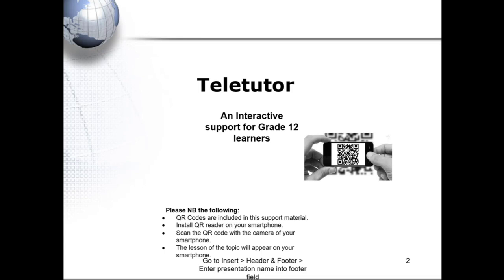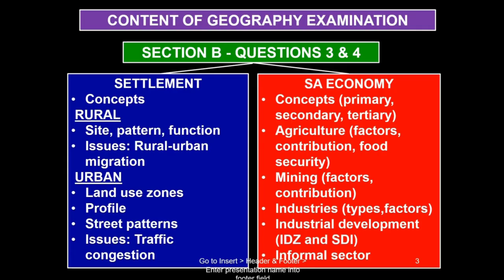Let's have a look at what we're going to be learning on paper Tuesday. What I've done is put a combination of your Section B, which would be your second paper. So in the second paper today, we're going to do settlement. Then in the settlement, we're going to do different types of concepts.